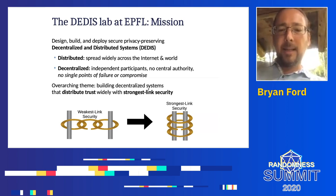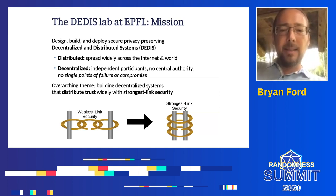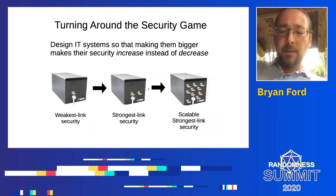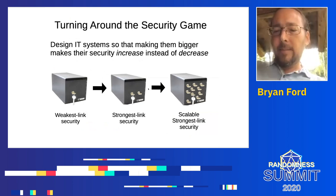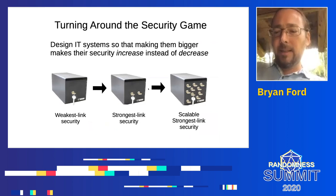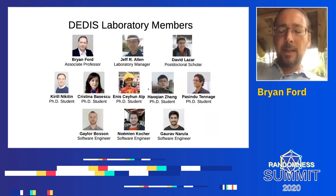With strongest link security, an attacker would have to compromise multiple systems, multiple people, or multiple companies in a federation in order to compromise security. We even know that this decentralized security can scale not just to two or three nodes, but to hundreds or thousands of nodes. When done right, we can make security scale so that systems get stronger as they become larger rather than weaker. That is why the DEDIS lab exists: to build protocols that do this and make them practical.